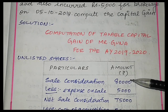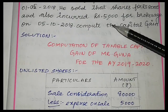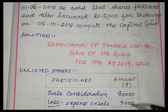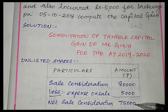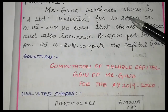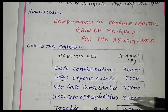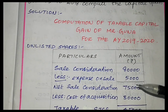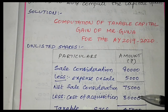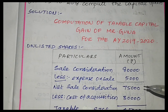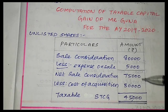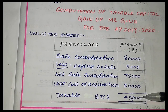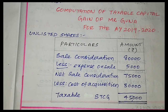Sale consideration is Rs. 80,000. He incurred Rs. 5,000 for brokerage, so we will arrive at a net sale consideration of Rs. 75,000. Since it is a short-term capital asset, indexation is not applied. Cost of acquisition is Rs. 30,000. So 75,000 minus 30,000 — the remaining Rs. 45,000 will be the taxable short-term capital gain.